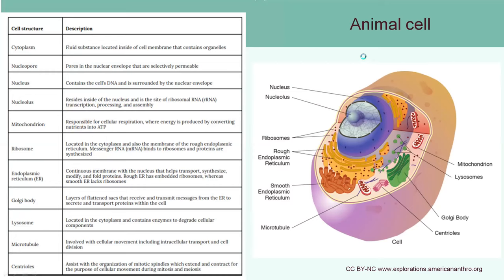Let's look at some organelle functions. Ribosomes, which prokaryotic cells also have, are the location where protein synthesis takes place. The rough and smooth endoplasmic reticulum serve transportation purposes. The rough ER has ribosomes attached to it and transports proteins produced by those ribosomes. In comparison, the smooth ER does not have ribosomes attached, but it can synthesize lipids.